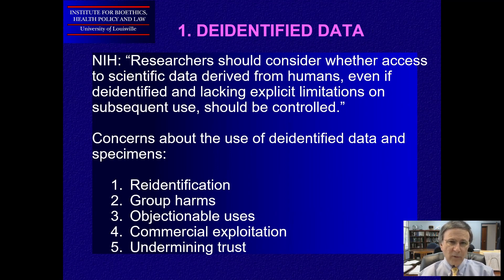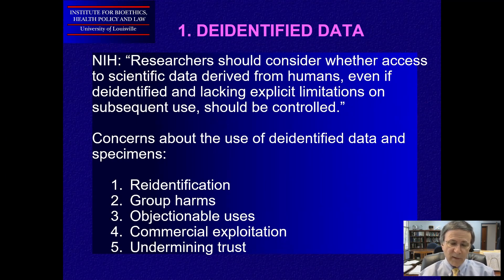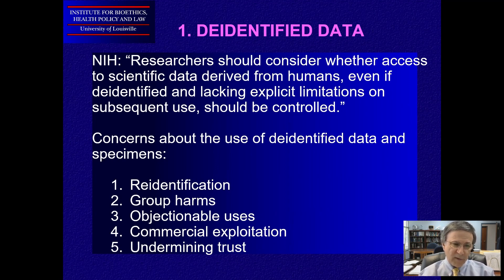Much of the literature dealing with de-identified data has focused on the risk of re-identification, especially with genetic samples. In my view, that may be the most tantalizing issue now, but it's not the most important one. There are others listed on the slide that I think may well be more important, and I want to talk about the second one — I don't have time to talk about all of them — and that is the issue of group harms.